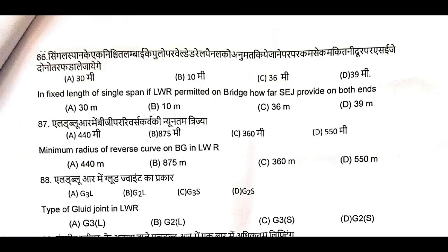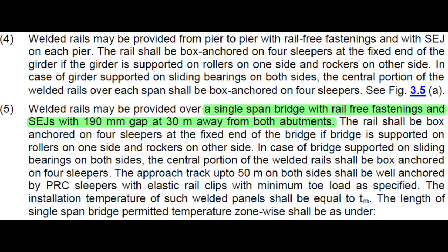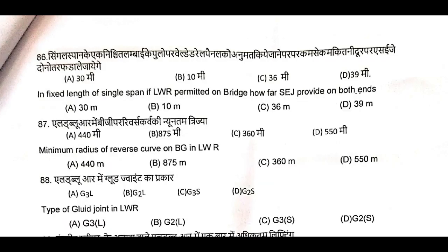Question Number 86: In a fixed length single span, if LWR permits a bridge, how far is SCJ provided on both ends? Location of SCJ on approaches of bridges — bridges with ballast deck without bearing, bridges with ballast deck with bearing, bridges with unbalanced deck — there are 8 conditions. Condition Number 5: single span, if LWR permitted on bridge, 30 meters away from both abutments. Question Number 86, A is the correct answer: 30 meters.